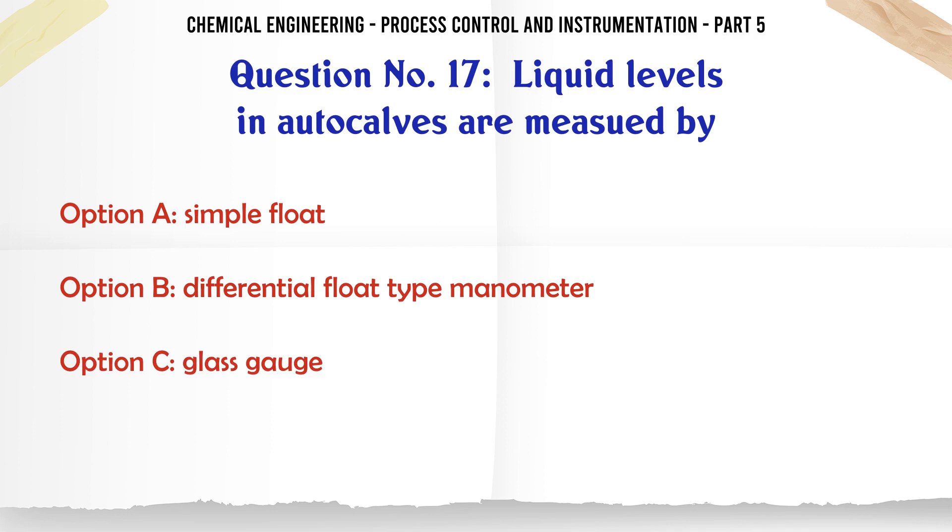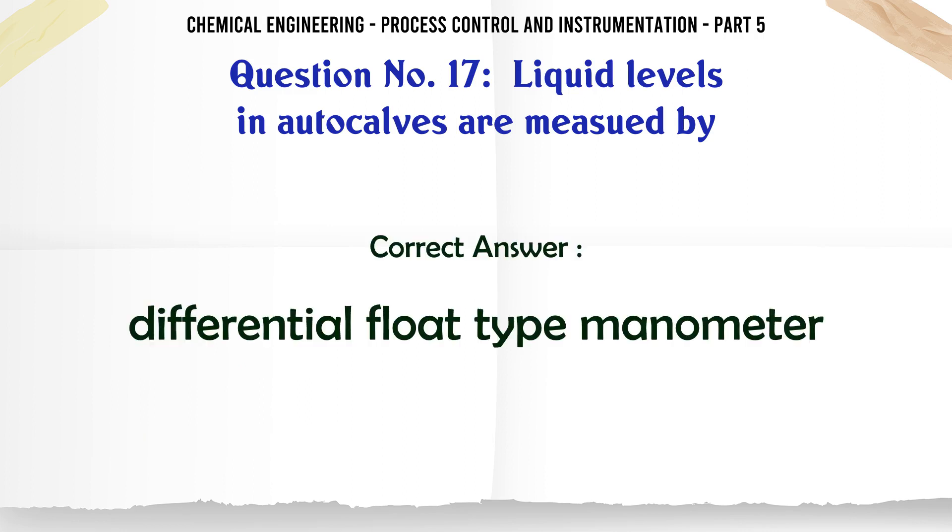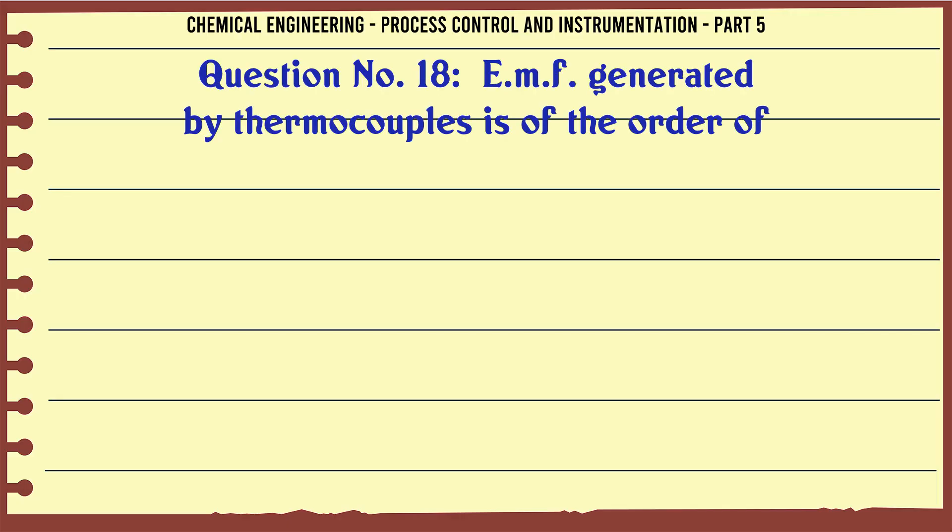Liquid levels in autoclaves are measured by: A. Simple float. B. Differential float type manometer. C. Glass gauge. D. None of these. The correct answer is Differential float type manometer.